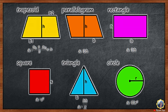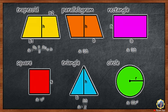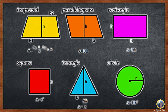Before we go to our lesson, let us review the area formula of the given plane figures. Trapezoid: base 1 plus base 2 divided by 2 times height. Parallelogram: base times height. Rectangle: base times height, or length times width. Square: side times side, or side squared. Triangle: base times height divided by 2. Circle: pi times radius squared.